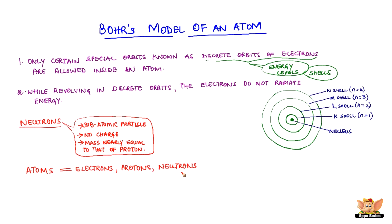So, atoms have electrons, protons and neutrons. Since atoms are composed of these particles, they are also known as subatomic particles.